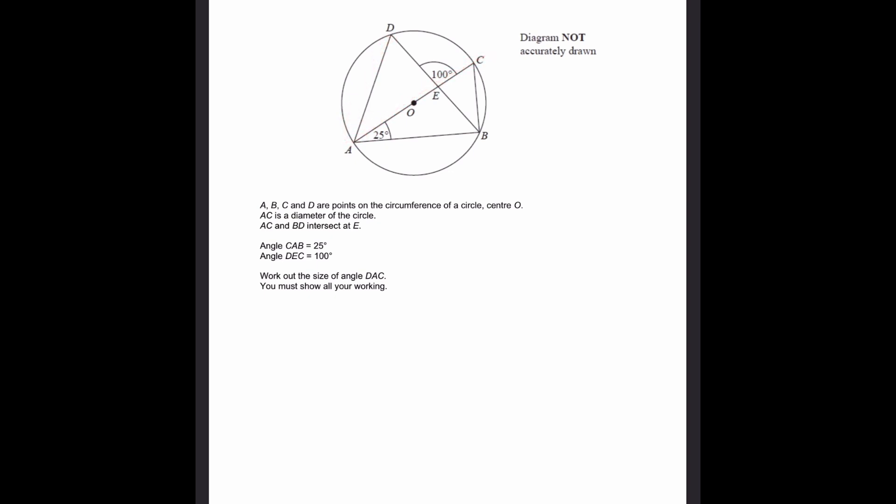Well, firstly we can see that angle AEB is equal to 100 degrees. Why? Because angle AEB equals angle DEC. And why is this? Because these two are straight lines, these two are vertically opposite angles.